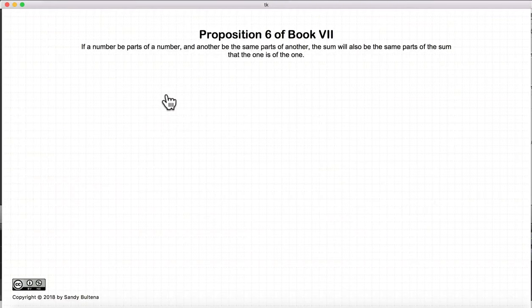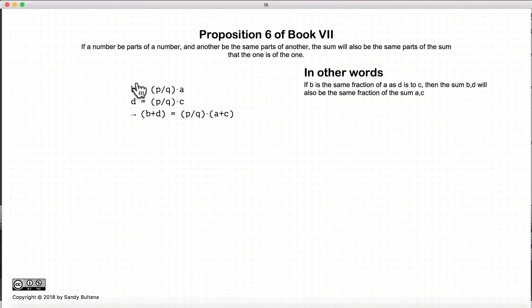This video presentation is going to be on Proposition 6 of Book 7. Now in this proposition, we are stating that if we have one number that is a certain number of fractions of another, and we have a third number that is the same number of fractions of yet a fourth number, if we add the first and third, so b plus d, and if we add a plus c, then b plus d will be the same number of fractions, or the same fraction, of a plus c.